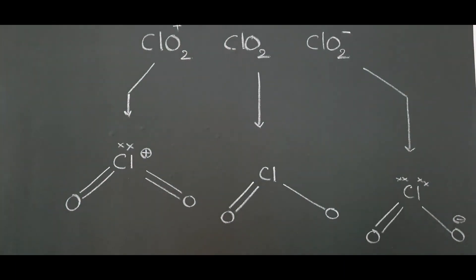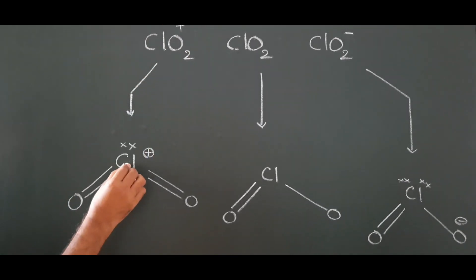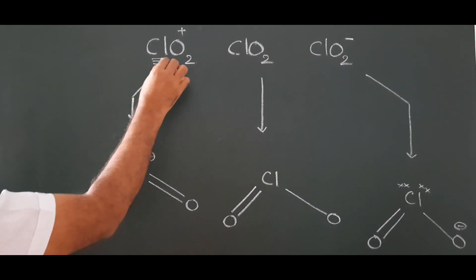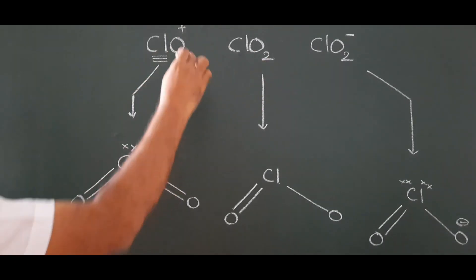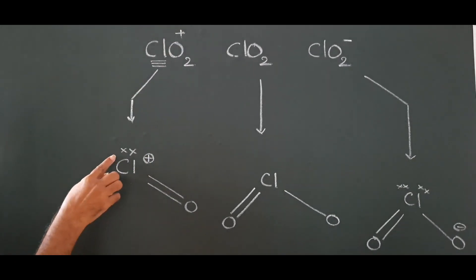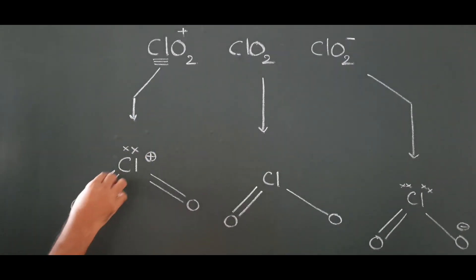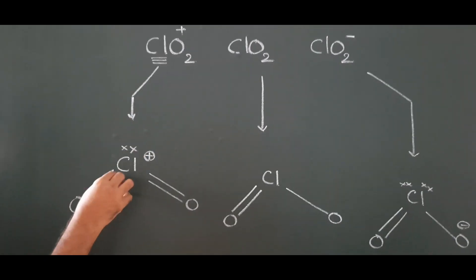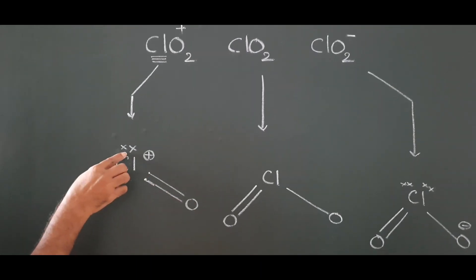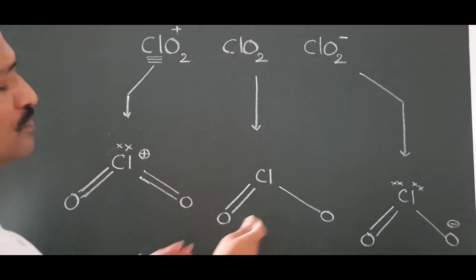In ClO₂⁺ (the chloronium ion), the central atom chlorine generally has seven electrons, but because of the positive charge it loses one electron, giving six electrons total. Among these six electrons, four are involved in bonding and two remain, so there is one lone pair on chlorine.